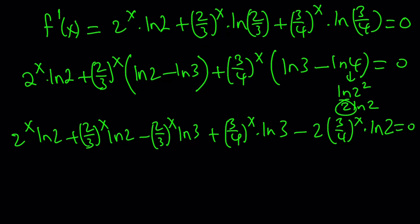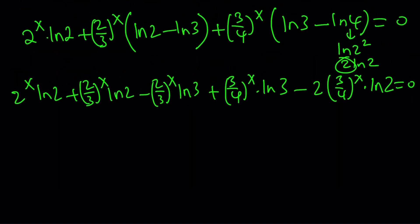It still looks bad, but we'll put it together. Let's simplify this by putting the ln(2)s and ln(3)s together. We have these two terms and this one as well. So let's put it together and factor out ln(2). If you factor out ln(2), we get 2^x + (2/3)^x - 2·(3/4)^x.